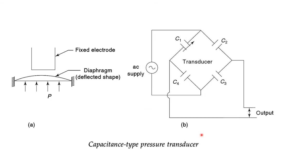We can also have a capacitive-type pressure transducer. Here a diaphragm is present; when pressure is applied, the gap reduces, which in turn changes the capacitance of the capacitor. This capacitor is attached to a Wheatstone bridge, so the change in capacitance disturbs the bridge. The voltage required to re-balance the Wheatstone bridge indicates how much the capacitance has changed, and from the change in capacitance we can calculate the applied pressure.